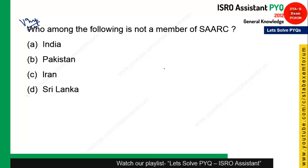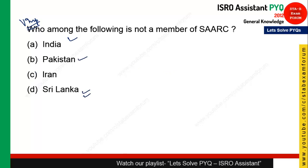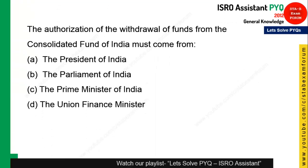This next question is about SAARC — the South Asian Association for Regional Cooperation — which includes India's neighbors. India, Pakistan, and Sri Lanka are member countries, but Iran is not a neighbor and is not a member of SAARC. Also remember: the headquarters of SAARC is in Kathmandu, Nepal. Option C is the correct answer.